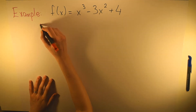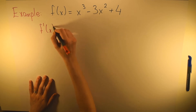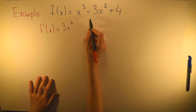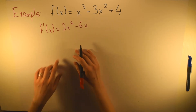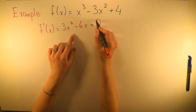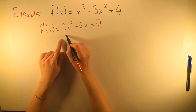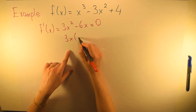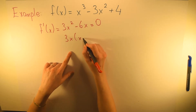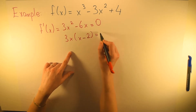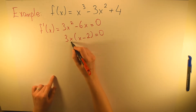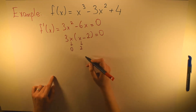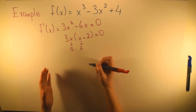Let's take the first derivative. The derivative of f(x) equals 3x² - 6x. We make this equal to zero. Factoring gives us 3x(x - 2) = 0, so x can be equal to 0 or x can be equal to 2.